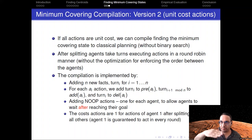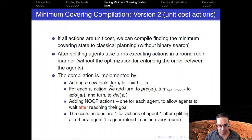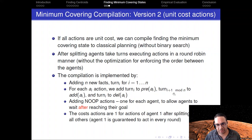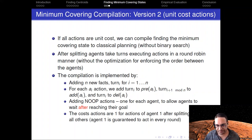For this compilation, we add propositions 'turn i' saying it's the turn of agent i. Each action is predicated on it being agent i's turn, then passes the turn to the next agent. We also add no-op actions to allow agents to wait after reaching their goal. The cost of the actions is one for the actions of agent one after splitting, and zero for all other actions. This is the compilation for the unit cost case.